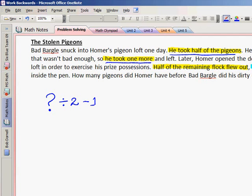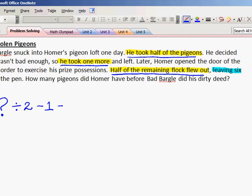We could also do it by multiplying by a half, but I find it to be a little bit easier to divide by two. We then come across Bad Bargle taking one more. How do we show that mathematically? Sure. We subtract one. And then again, we read another clue about half of the flock flying away. So we show that by dividing by two.